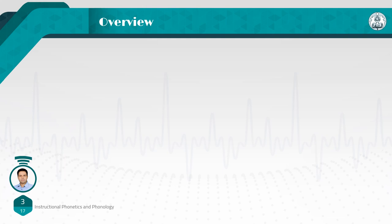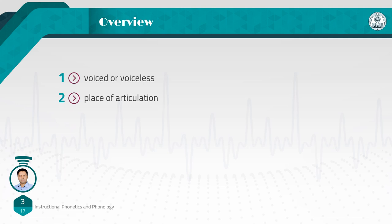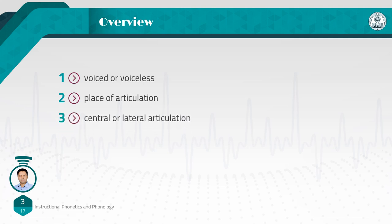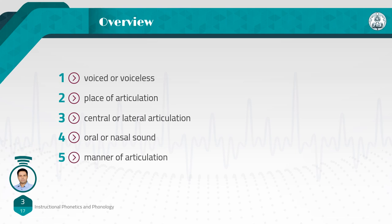Before starting this session, let's have an overview of what we said in previous sessions. If you remember, we said that consonants can be described in terms of five factors: voiced or voiceless, place of articulation and central or lateral articulation, oral or nasal sounds, and finally, manner of articulation.